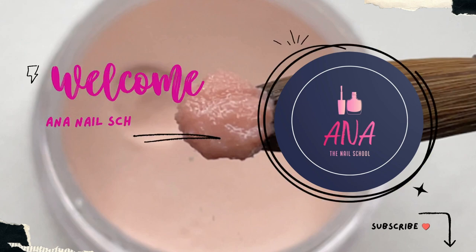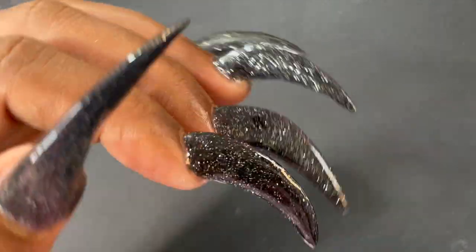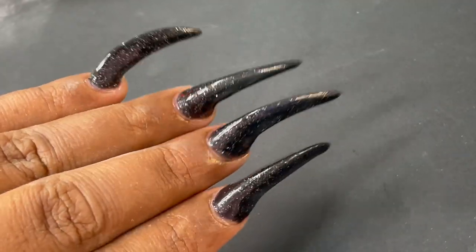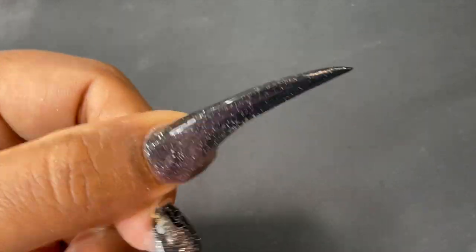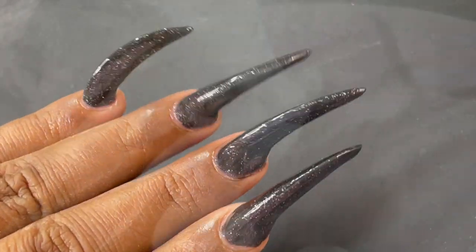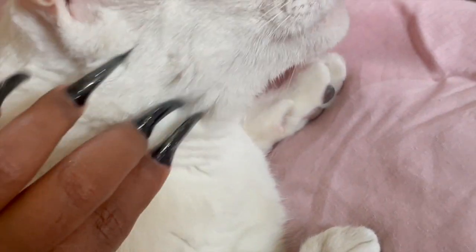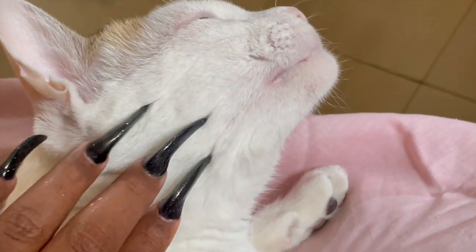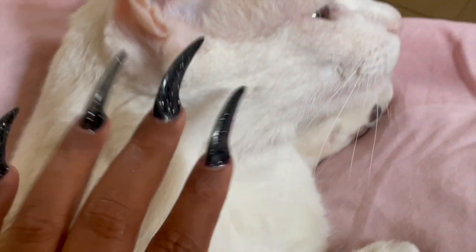Hey friends, welcome back to Anna Nail School English channel. I did something crazy and I'm going to show you what I did. So these are the nails that I'm going to show you how I did it. This is called claw nails and this is a new trend that is going on around social media. So I wanted to recreate it and my cat loved it. So let's start with the video and please don't forget to subscribe for amazing nail content.